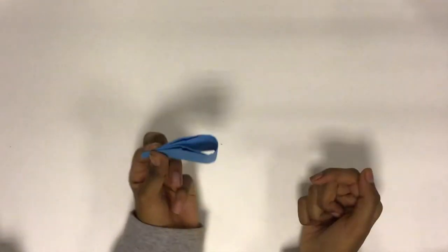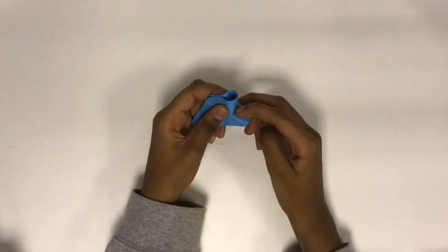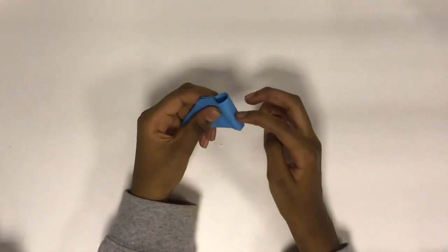Then, once you remove your finger, there's going to be a hole, a loop in the middle. Then you're going to push down on the loop with your finger.